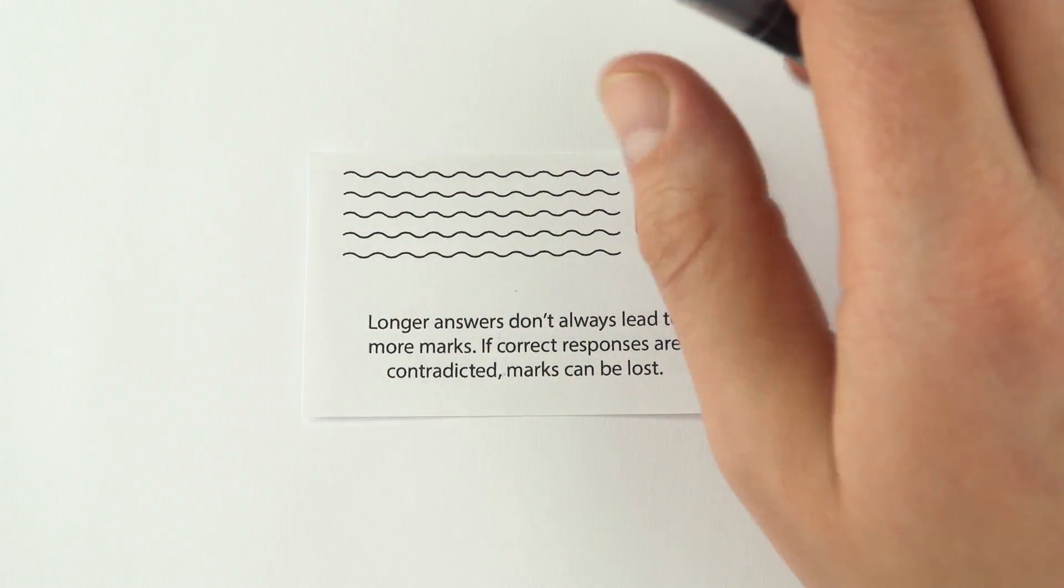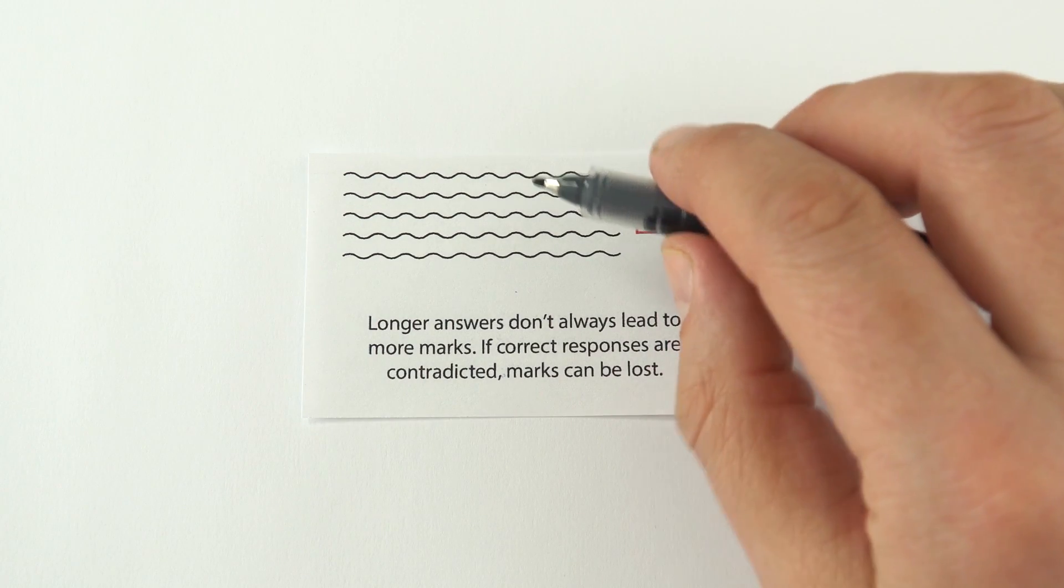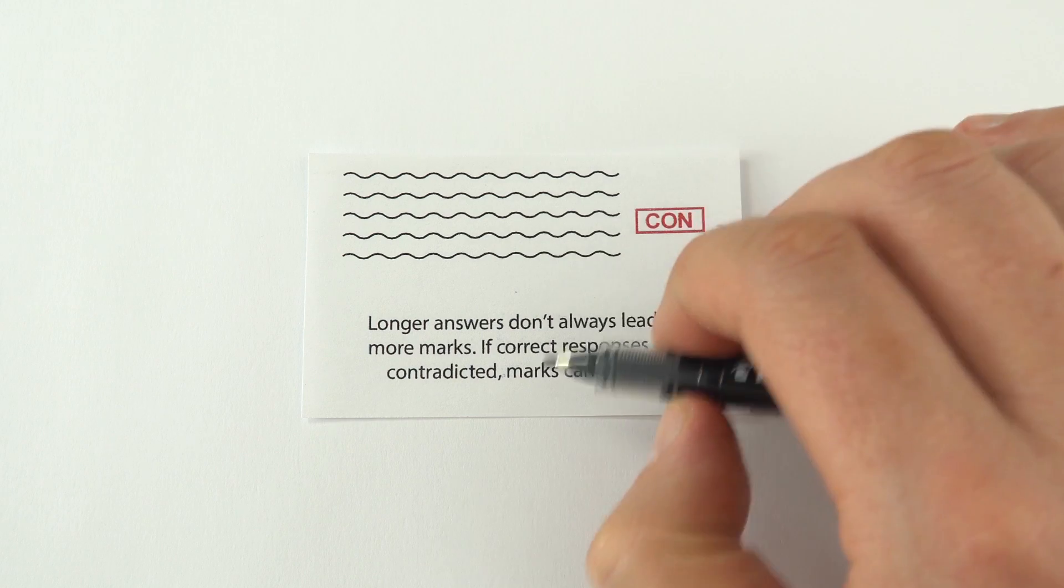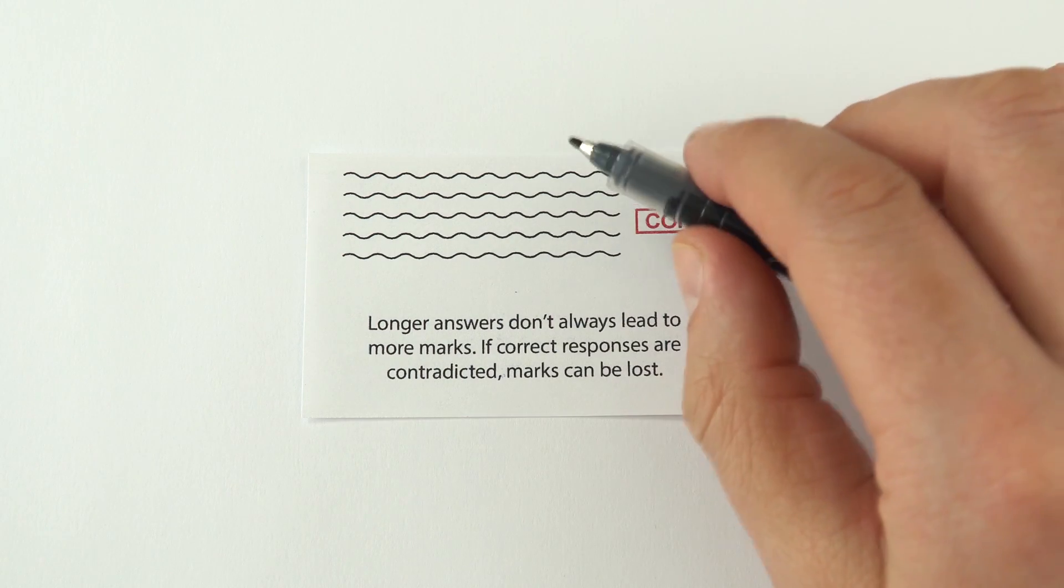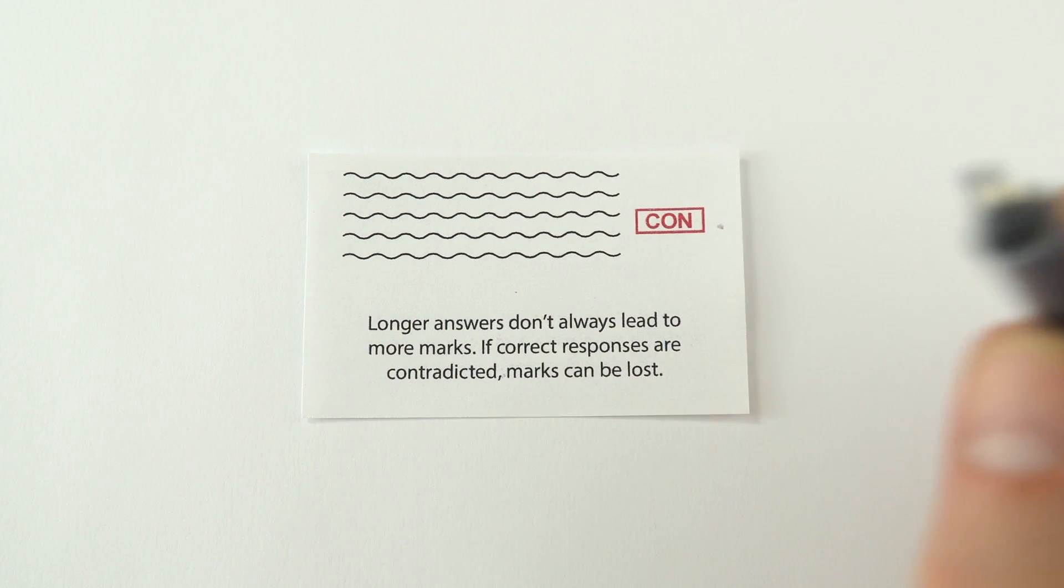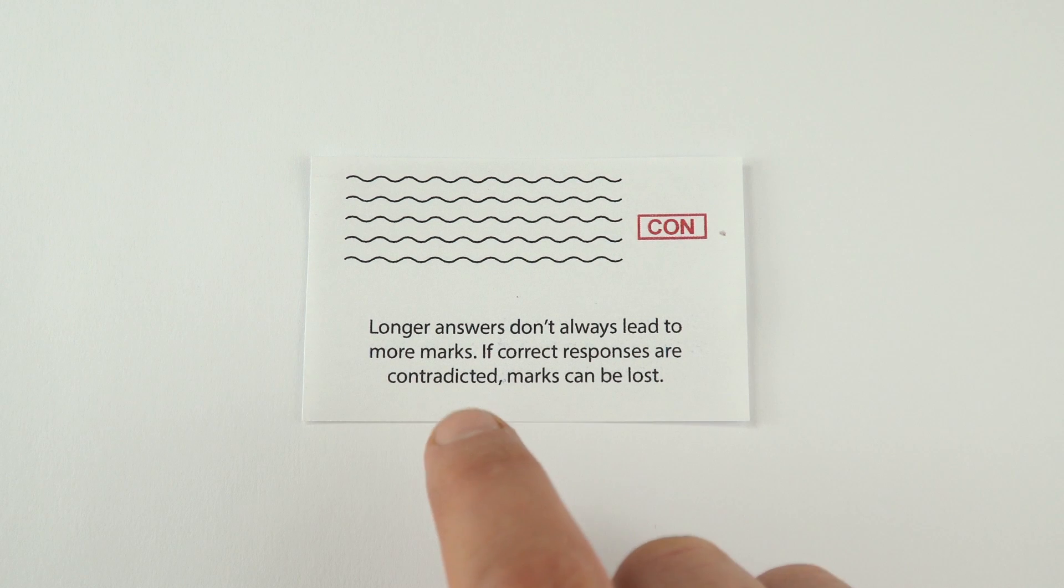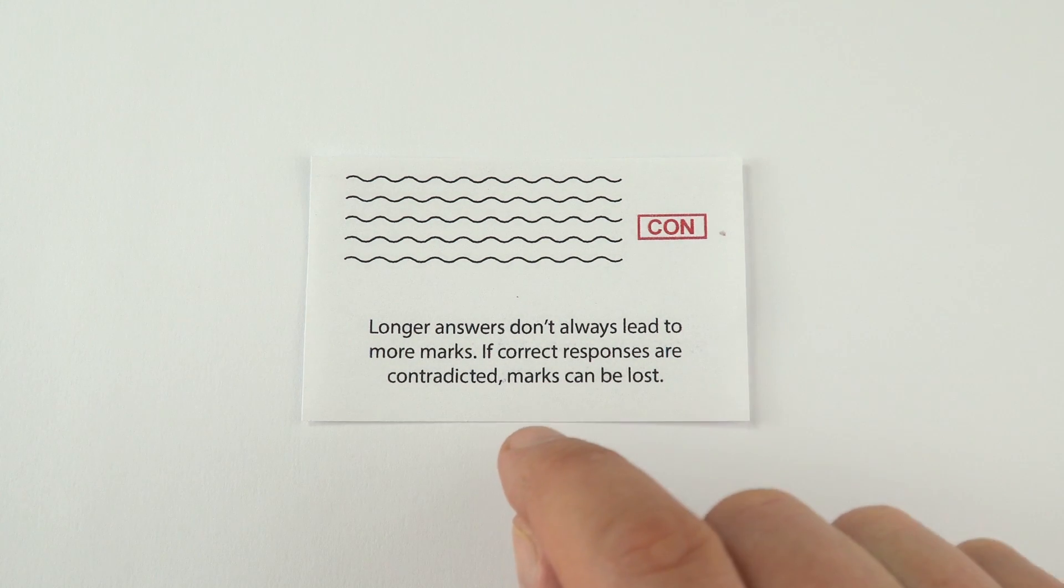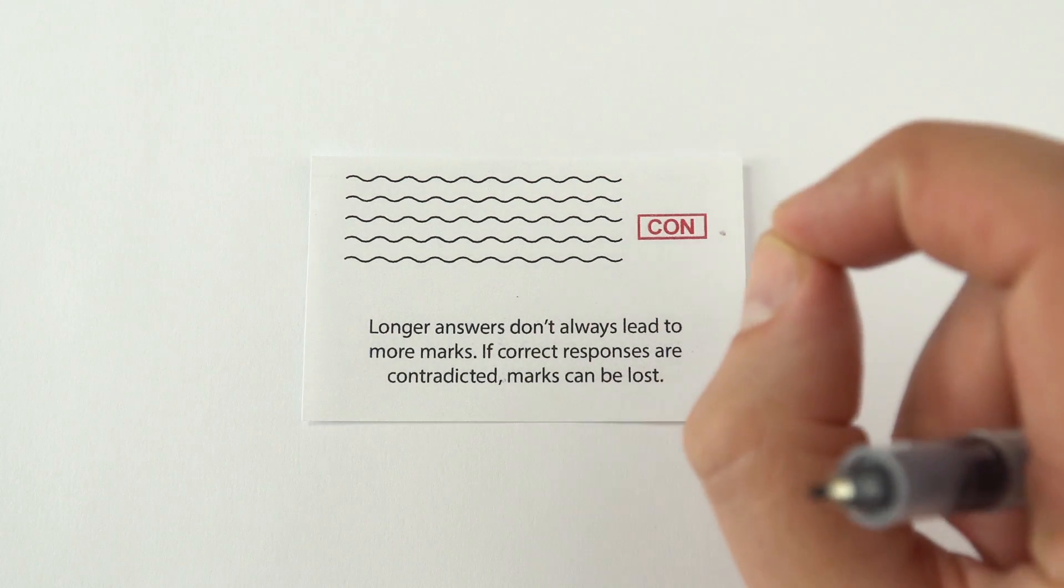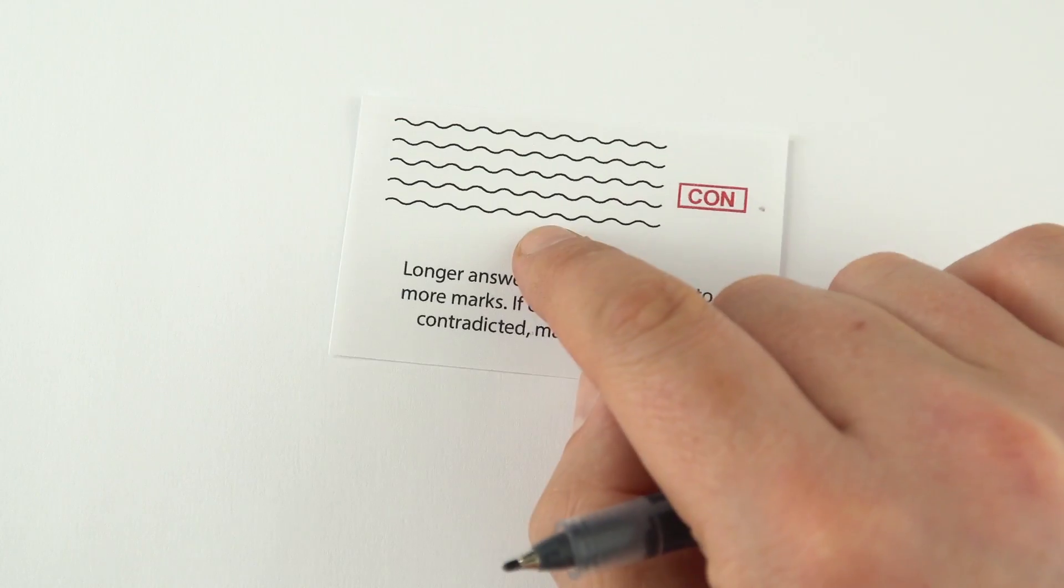A lot of people think the more you write, the more chance you've got to get marks. I've seen this as a teacher so many times, where people start out really well, and then it just descends into waffle, and then they contradict themselves. They might have gained a mark at the start of the question, then contradicted themselves, and they've lost the mark they've already earned. Longer answers don't always lead to more marks. The people who get more marks tend to write shorter answers because they know their physics, they're concise, they're straight to the point.